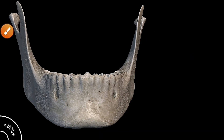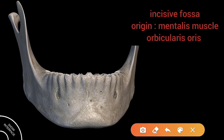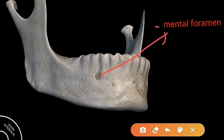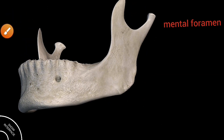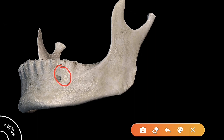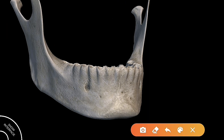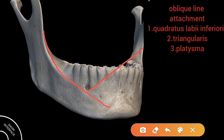On either side of the symphysis menta there is a depression called the incisive fossa. These give origin to the mentalis muscles and orbicularis oris muscles. The mental foramen is present on both sides, below the second premolar region, and it provides passage for the mental nerves and vessels. The oblique line runs from the mental tubercle and continues with the anterior border of the ramus. This oblique line provides attachment for the quadratus labii inferioris, triangularis, and platysma muscles.